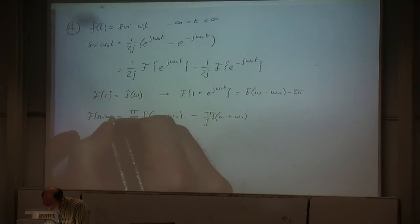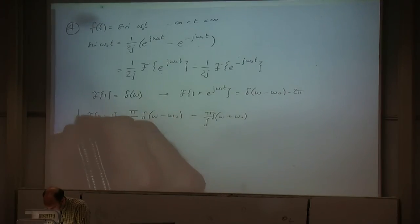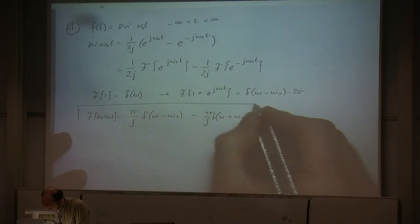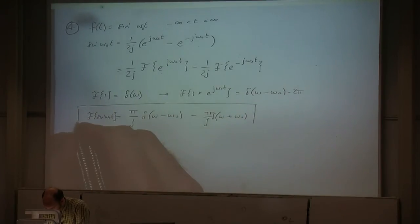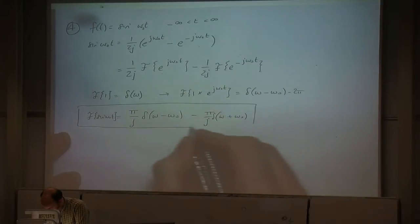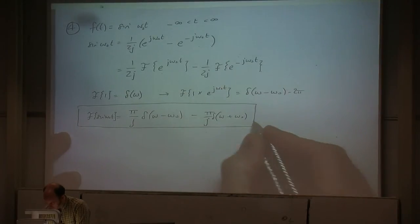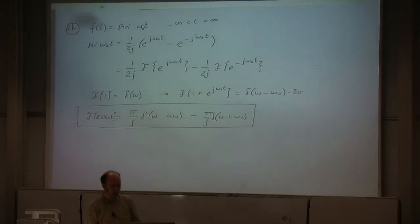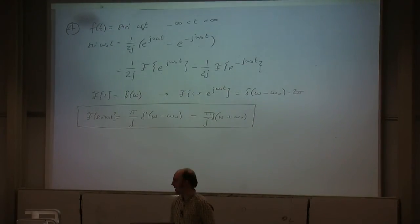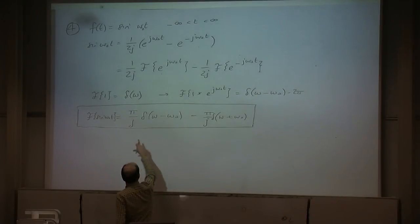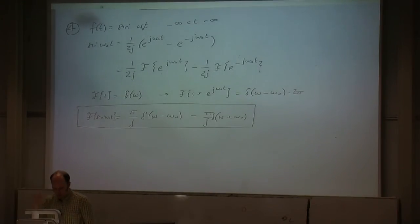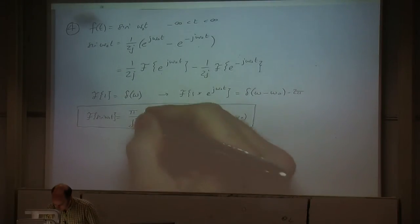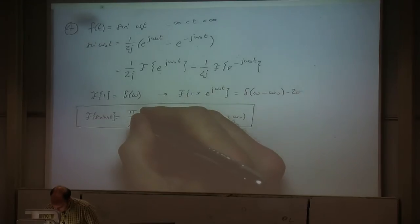You'll notice that the Fourier transform of sine omega-naught t is actually complex — we've got j's on the bottom. Whereas the Fourier transform of cosine is not complex.